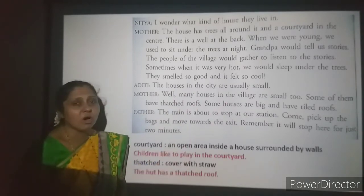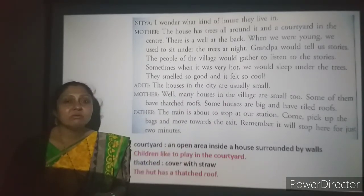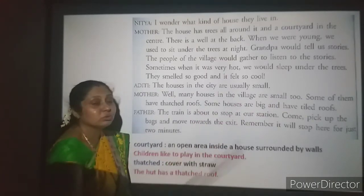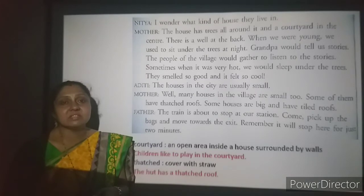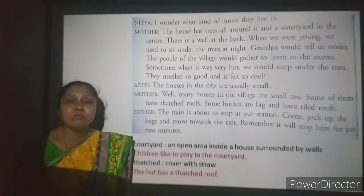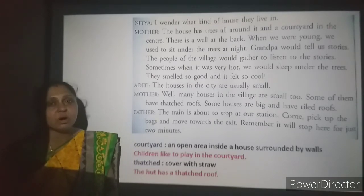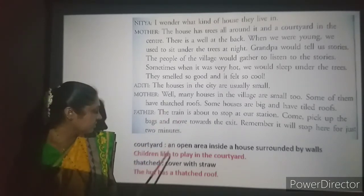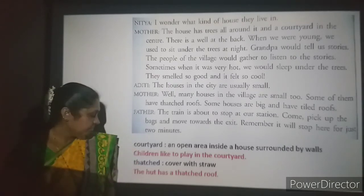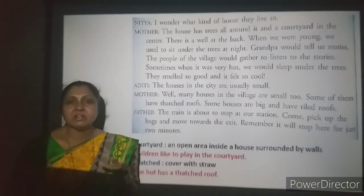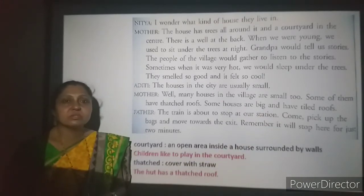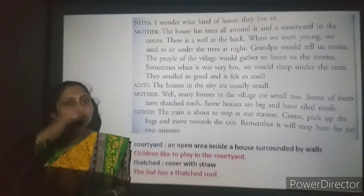Aditi observes: 'The houses in the city are usually small.' Mother replies: 'Many houses in the village are small too. Some of them have thatched roofs.' Thatched means covered with straw, dried grass, or dry hay — huts usually have thatched roofs. Some houses are big and have tiled roofs, with tiles placed on top. So village houses vary from small thatched huts to larger tiled houses.